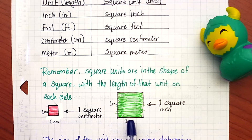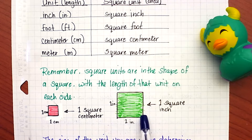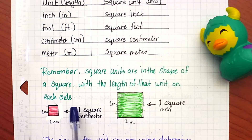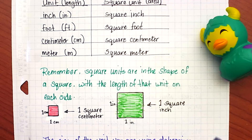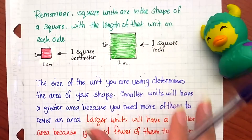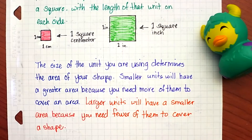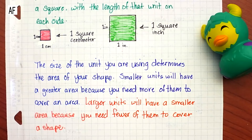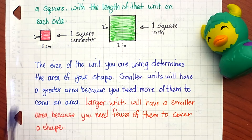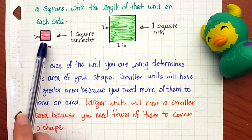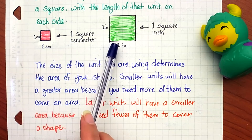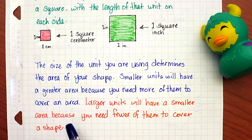If I want to make a square unit that's one square inch, I would measure one inch on each side and make that square shape. I measured these with a ruler, and you can see that one square centimeter is smaller than one square inch. Remember what we talked about in our previous lesson: the size of the unit determines the area number. If you're using smaller units, your area will have a greater number because you need more of them to cover your shape. If you're using a larger unit, you'll have a smaller number because you need fewer of them.